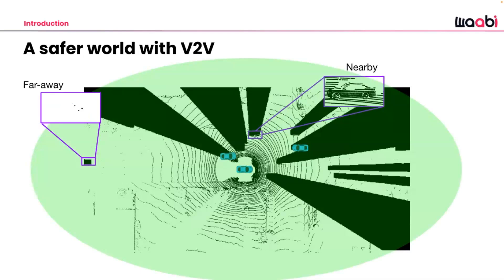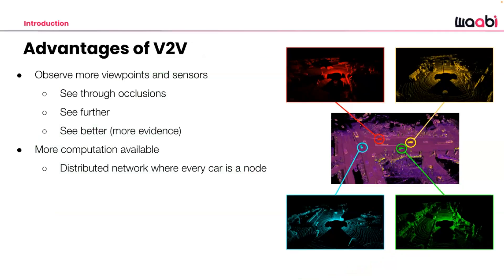One way to be more robust and see further is to have vehicle-to-vehicle communication or vehicle-to-infrastructure setups. Before the big boom of V2V in computer vision, vehicle communication was used just for routing and traffic management. Now there's an idea of communicating sensor data between different vehicles, so far-away objects with few observations can be better understood if another vehicle or infrastructure with cameras or lidar is in that area.